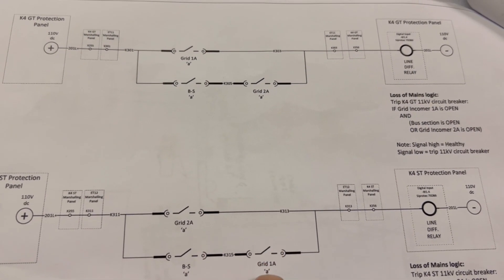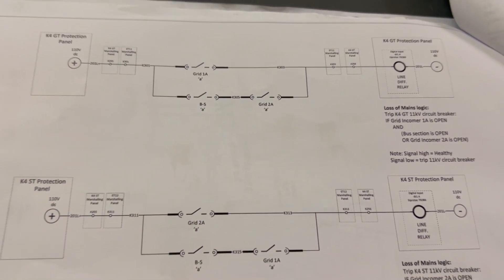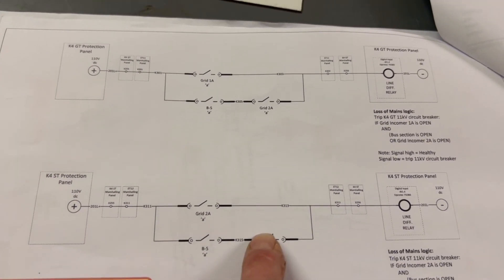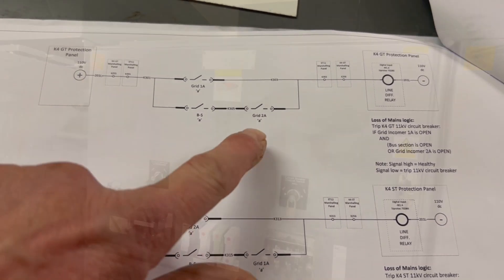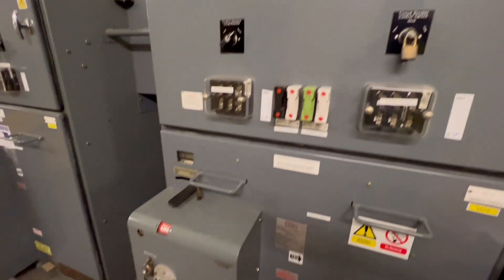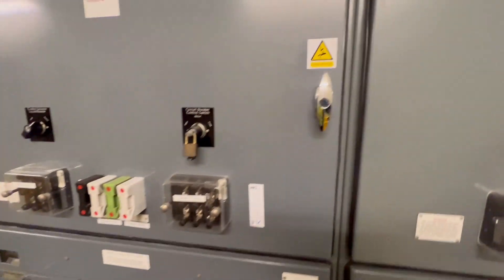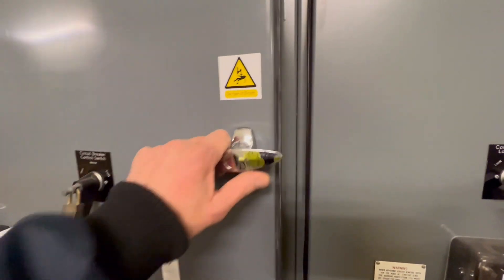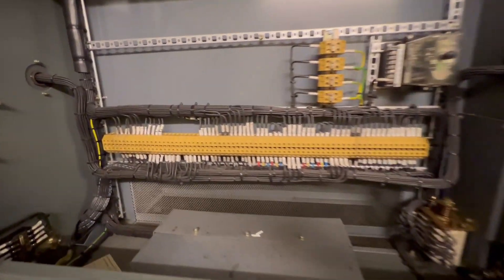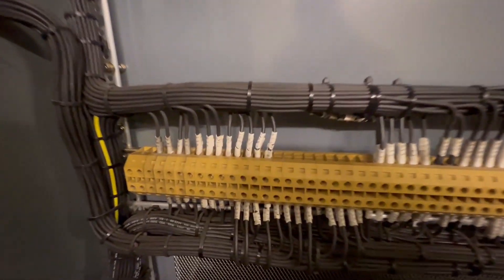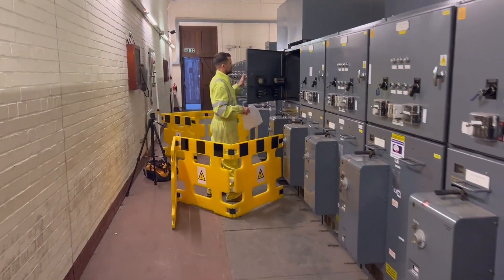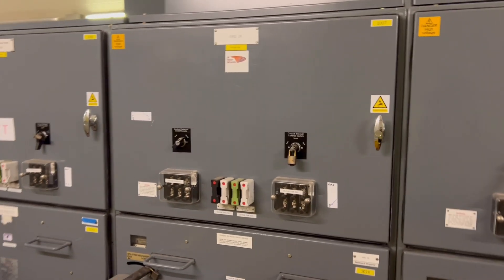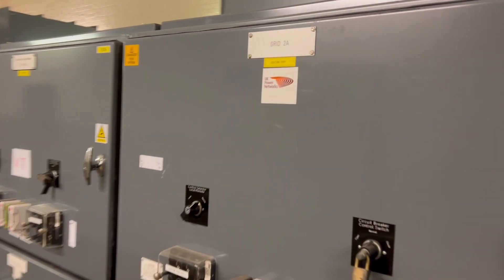Auxiliary contacts on the three associated circuit breakers for Grid 1A, 2A, and the bus coupler need to be tested to ensure they are operating correctly. The wiring has already been checked between the units to make sure the correct signals can be generated, but we now have to physically open each of the associated circuit breakers to check that the auxiliary contacts are working correctly. The connections for these auxiliary contacts are at the front of the panels and had to be disconnected in turn and checked during breaker operation.